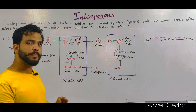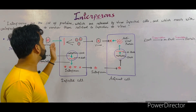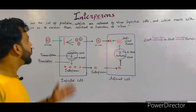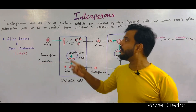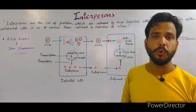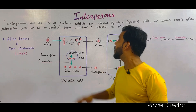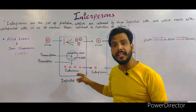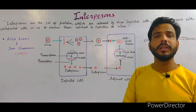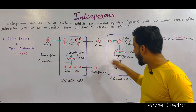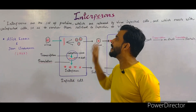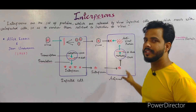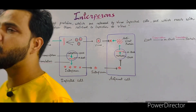In conclusion, interferons are produced in cells that have been attacked by a virus, and they provide signals to adjacent cells to make them resistant to the virus. To restate the definition: interferons are the set of proteins which are released by the virus-infected cell and which react with uninfected cells so as to render them — that is, to provide them — resistant to infection by the virus.